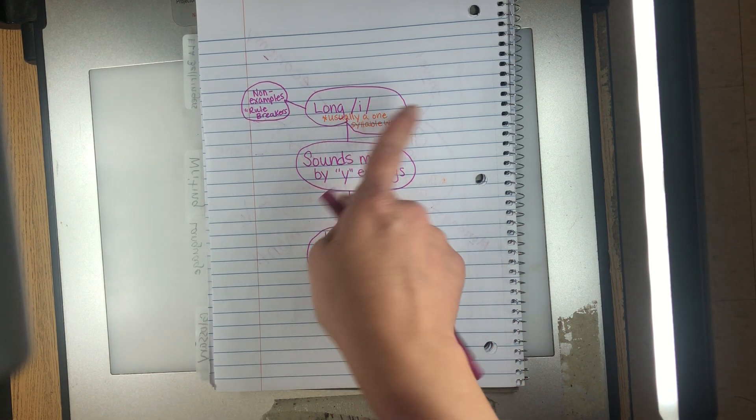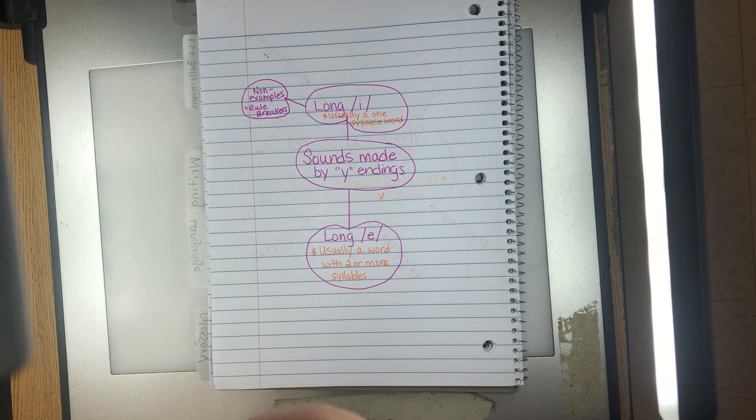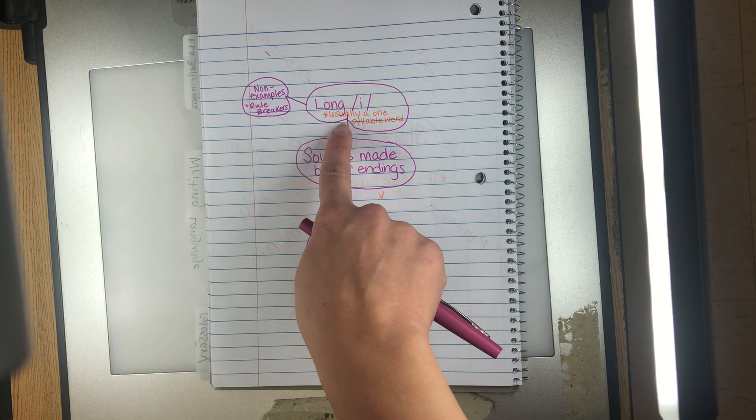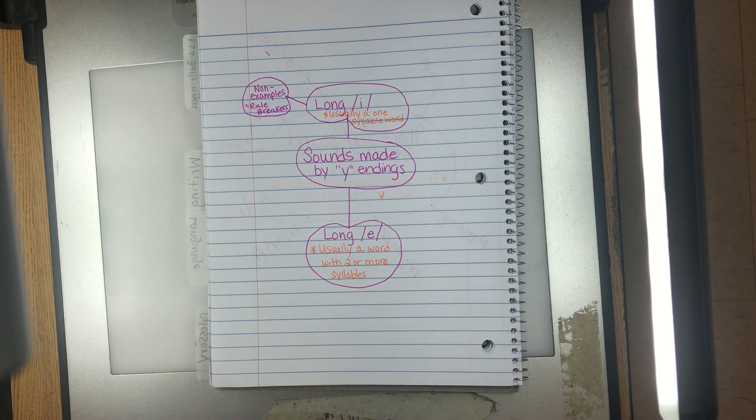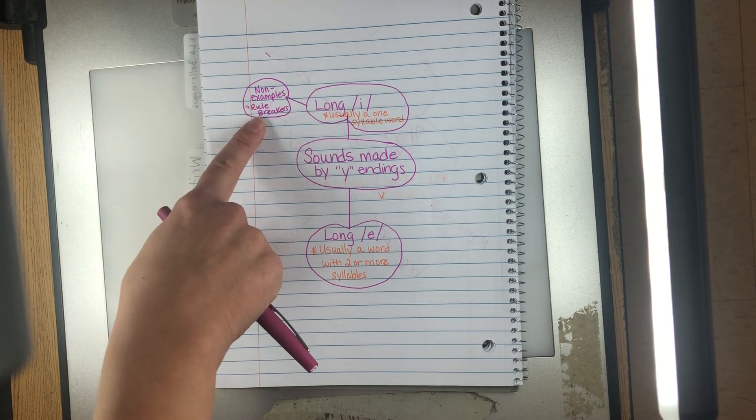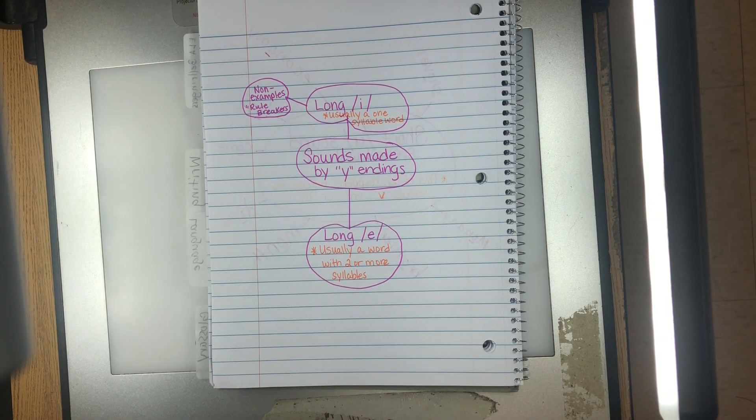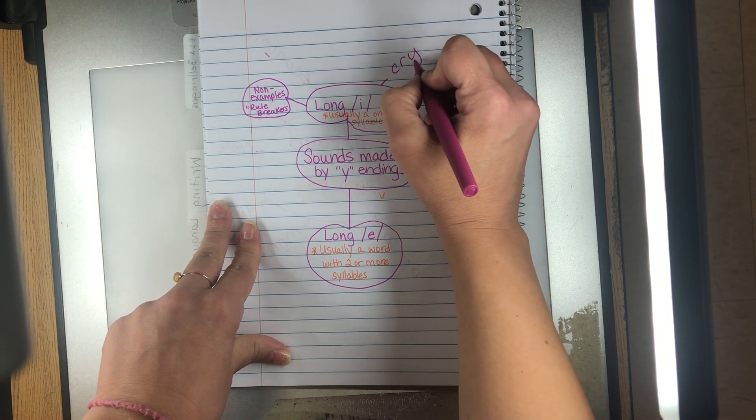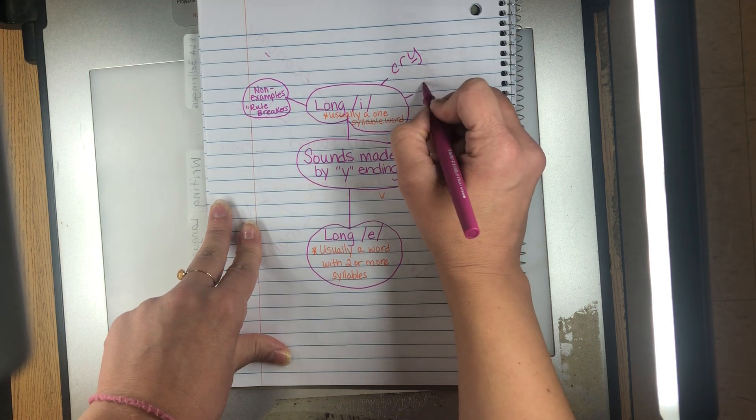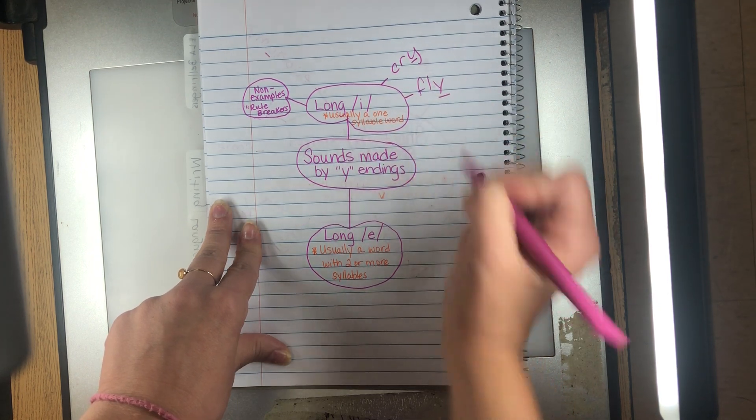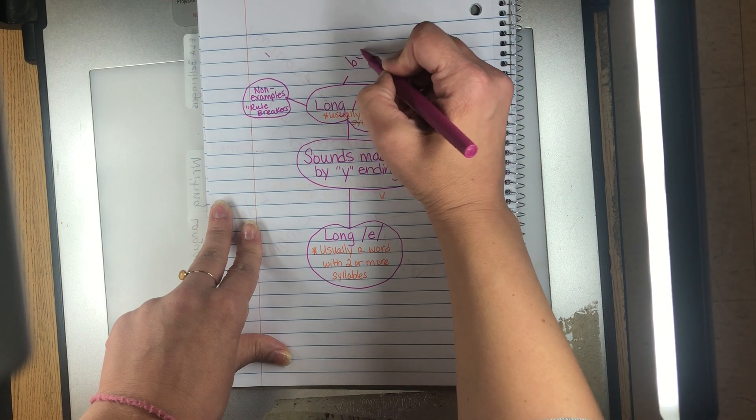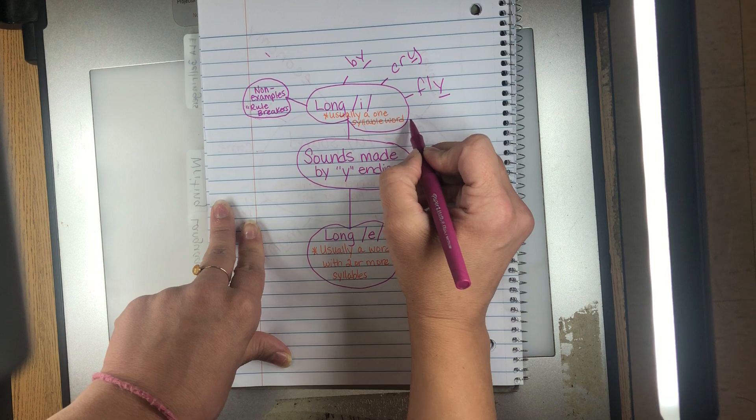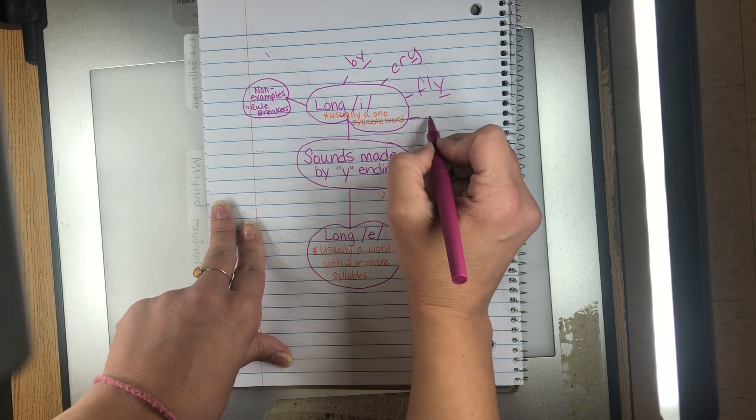The parts that I have in orange are not a firm rule that never gets broken, but normally, at least with the words that you started seeing, a long I sound will happen if the word has one syllable. But we are going to talk about some non-examples or some rule breakers. So for example, the word cry or fly, by, sly.